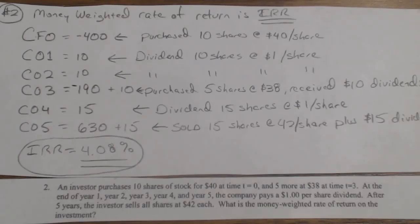Okay, this is page 68, problem number 2. It says an investor purchases 10 shares of stock for $40 at time 0, and 5 more at $38 at time 3.